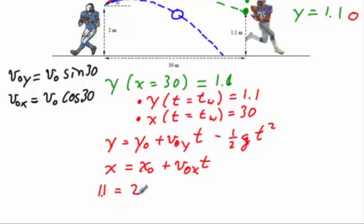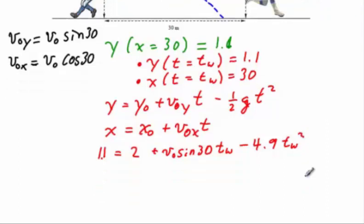In this case, it's very simple to fill in all the necessary information. The first equation becomes 1.1 equals y zero is 2, v zero y is v zero sine 30, for time we use the time of the win, the special time, minus half of g is 4.9, time of the win squared.